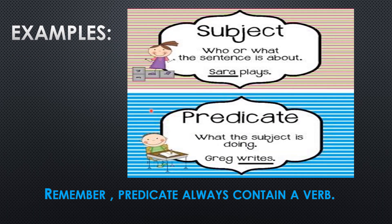Let's take one more example. Subject tells us who or what the sentence is about. Like — Sarah plays. So what is the subject here? Sarah. This girl. Predicate — what the subject is doing. For example, Greg writes. So this boy is writing. Greg writes, so writes is the predicate. Predicate tells about the action. Remember, predicate always contains a verb, children.